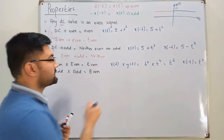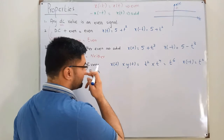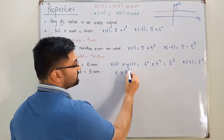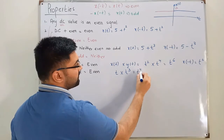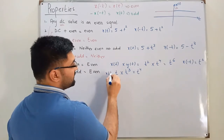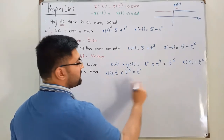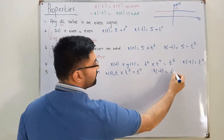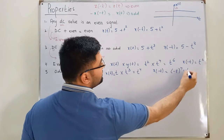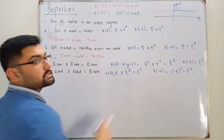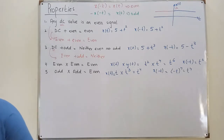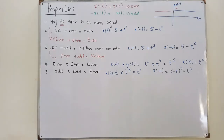The fifth property: odd multiplied by odd is also an even signal. Let's say X(t) = t multiplied by t³ = t⁴. Time-reversing gives X(-t) = (-t)⁴ = t⁴. Since X(t) equals X(-t), we get an even signal.